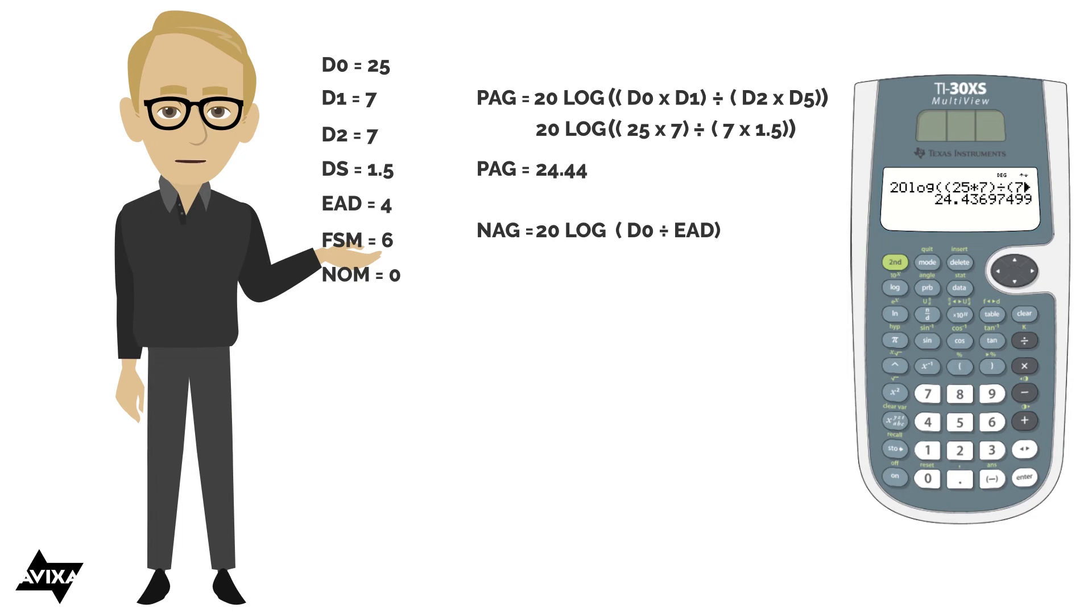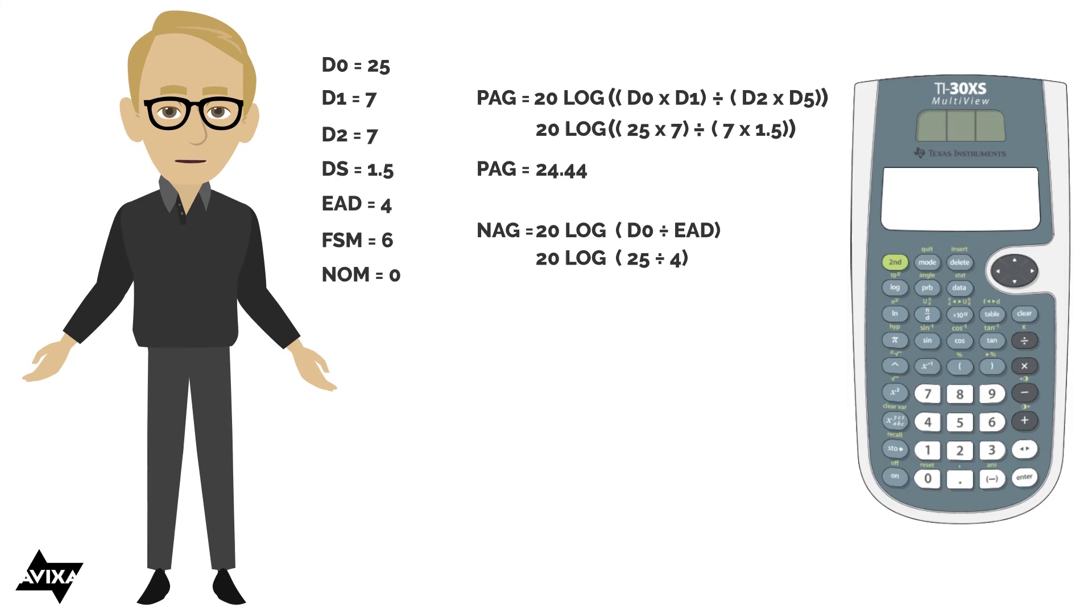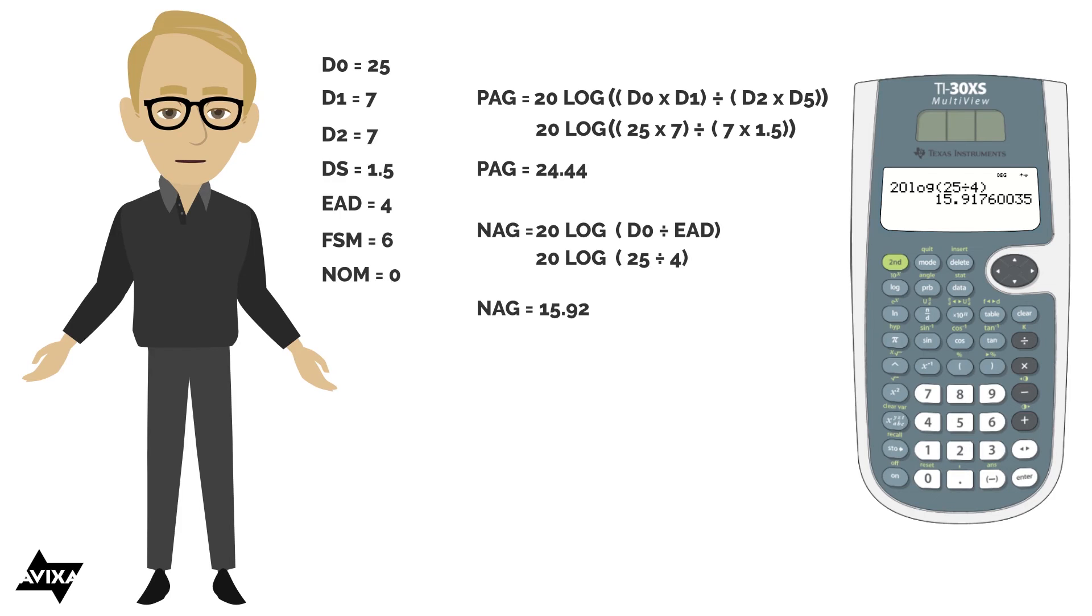Let's see what we get on the NAG side. We have 20 times the log of D0, and it's going to be the same D0 that we used a moment ago. And the EAD, equivalent acoustic distance, is going to be 4. So 20 times the log of 25 divided by 4. Let's see what we get. 20 log, 25 divided by 4, close the paren, and round it here, 15.92. So NAG equals 15.92.